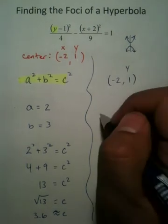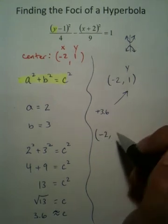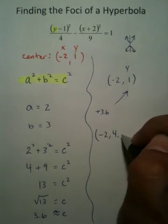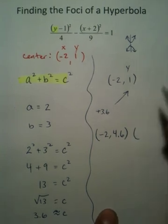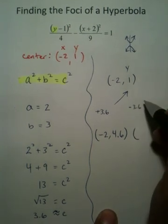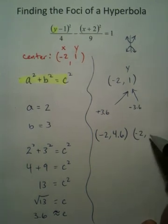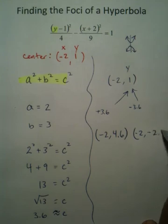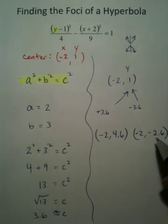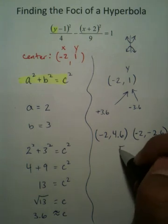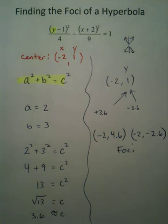So what I'm doing is I'm adding 3.6 to y and I'm getting this coordinate, negative 2 and 4.6. Then what I'm doing is I'm subtracting 3.6 to this value, which gives me negative 2 and negative 2.6. So on a piece of graph paper you have two points which are the two foci, and that's where their location is, and you're all done.